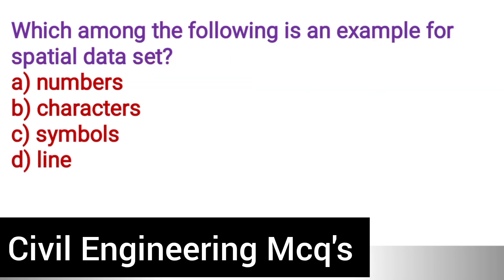Next question: Which among the following is an example of a spatial data set? Option A: Numbers. Option B: Characters. Option C: Symbols. Option D: Line. The correct answer is option D, line.